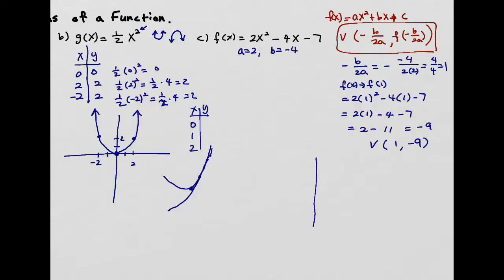When graphing, you start at the vertex (1, negative 9). If the leading coefficient a is positive, the parabola opens upward. If a is negative, the parabola opens downward. Since a is positive here, we know it goes up. So we want to find two more points — one on each side of the vertex.